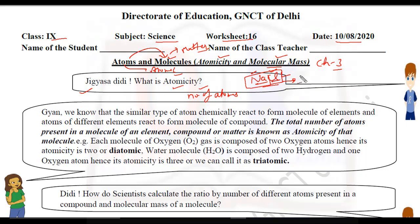So the atomicity of sodium chloride is 2. Now we know that similar types of atoms chemically react to form a molecule of an element. For example, oxygen plus oxygen forms O2.